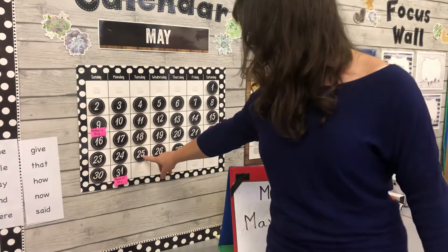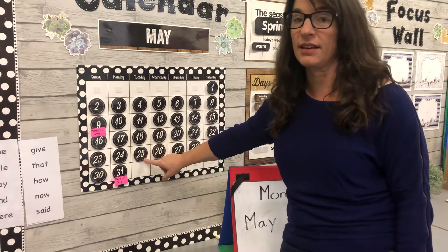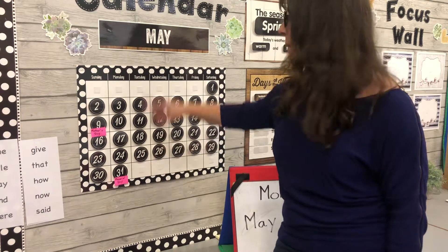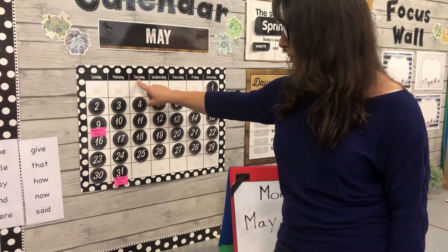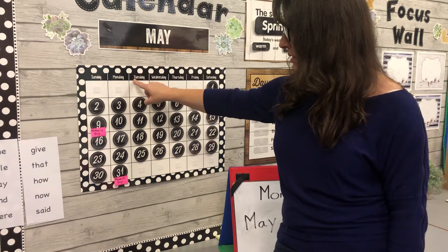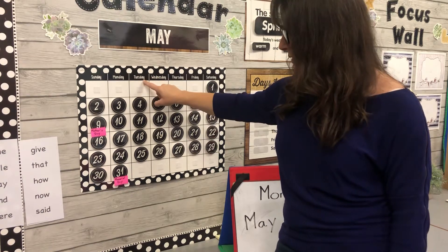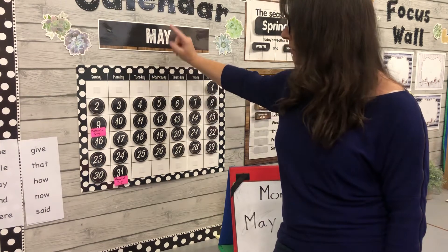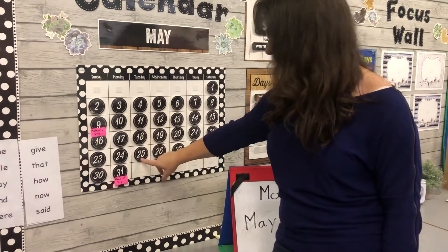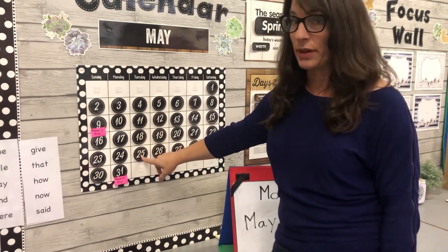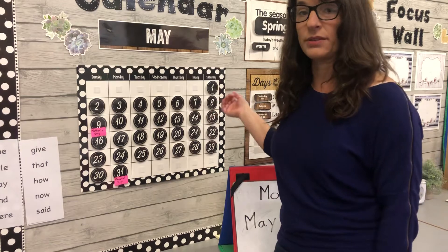Today is the 25th day of May, and it's also a Tuesday. You say the day of the week first — Tuesday — then the month, May, then the date, the 25th, and then the year, 2021.